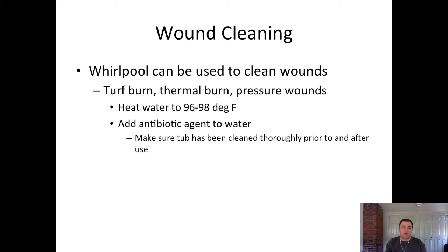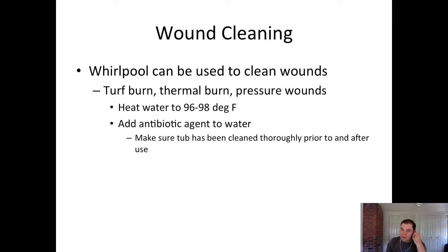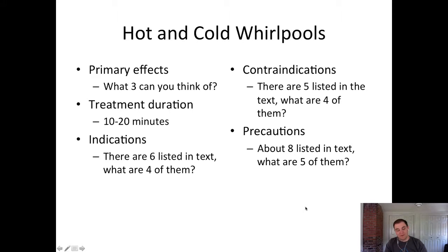Pain control in whirlpool is mediated by A-beta nerve fibers activating the gate control mechanism. Whirlpools can also help increase range of motion. A less commonly used application is wound cleaning — heating the water to 96–98 degrees, adding an antibiotic agent, ensuring the whirlpool tub is clean before and after, and immersing the body part. This is used for turf burn, thermal burns, or pressure wounds. Whirlpools should be cleaned daily, ideally as part of opening or closing tasks.